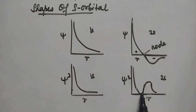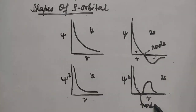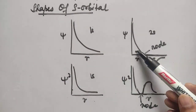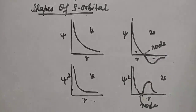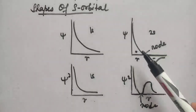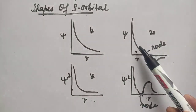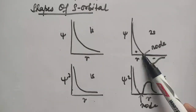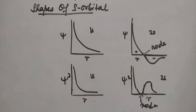When ψ² is zero and the graph touches the axis, that point is called a node. Nodes are the regions where the probability of finding the electron is zero within the atom. More precisely, the point where the wave function changes from positive sign to negative sign is called a node. In the 2s orbital, the wave function is positive, decreases to zero, then becomes negative — so at the junction where the graph intersects the axis, it is called a node.